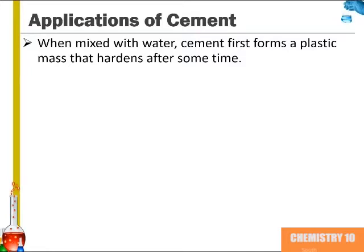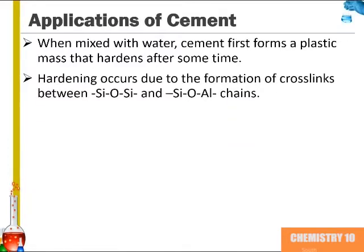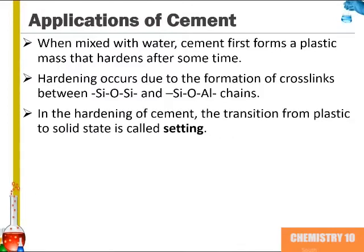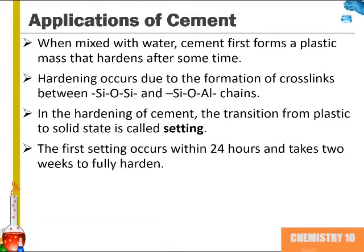Cement is a highly versatile and useful building material. When mixed with water, cement first forms a plastic mass that hardens after some time. Hardening occurs through the formation of crosslinks, also known as chemical bonds, between different chains in the material. In the hardening of cement, the transition from plastic to solid state is called setting. The first setting occurs within 24 hours and takes two weeks to fully harden.